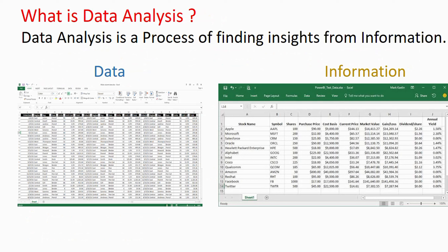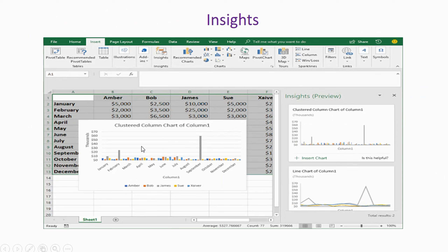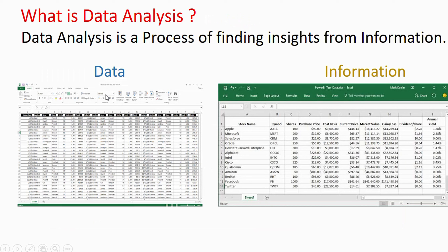Modeling means according to our business process we need to arrange the data. For example, I have data in Excel and I have converted it into an information table with columns like stock name, symbol, shares, purchase price, cost basis, current price, and market value. After creating the information, I need to create insights — for example, here I have created a graph. So the flow is: data into information, and that information converts into insights. This can be created in Excel using advanced Excel — pivot tables and charts together create insights.